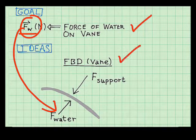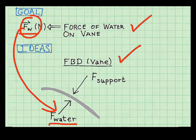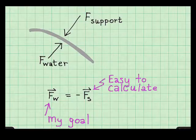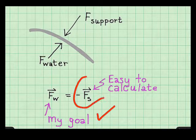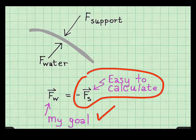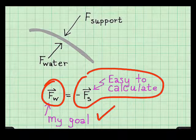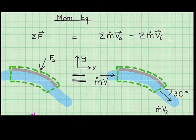I draw a free body diagram of the vane without the water. There are two forces acting on the vane: the force of the water on the vane from below, and the force of the support required to hold the vane stationary from above. My goal is the force of the water on the vane, but what's easy to calculate is the force of the support. So I'm going to calculate F sub s and then use that to find my goal.